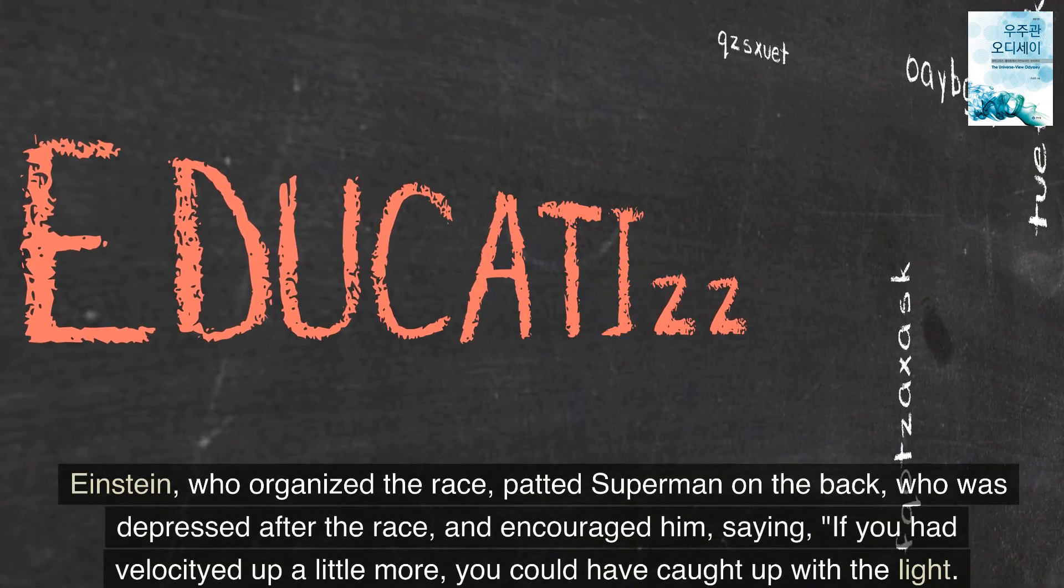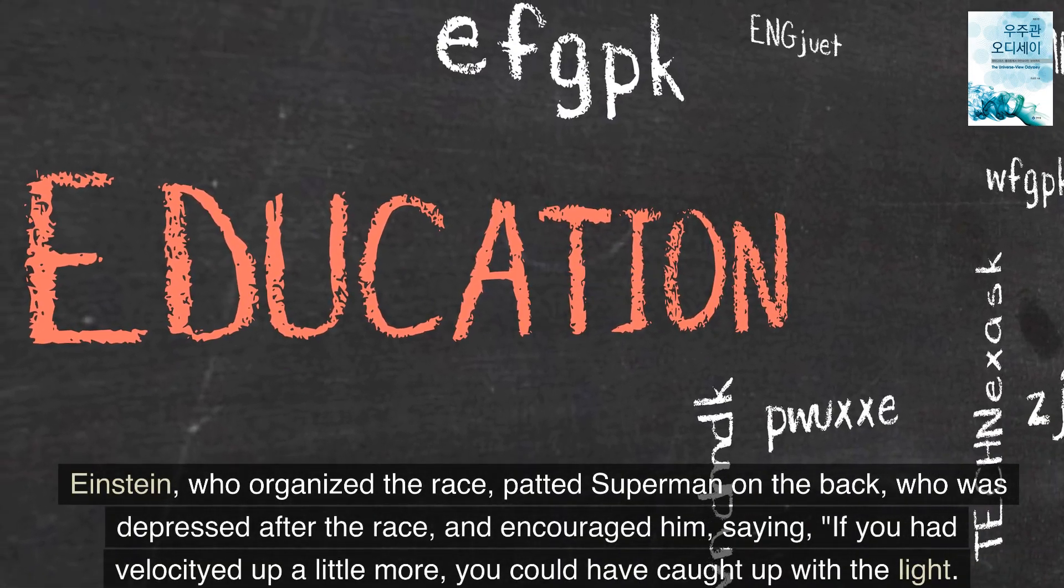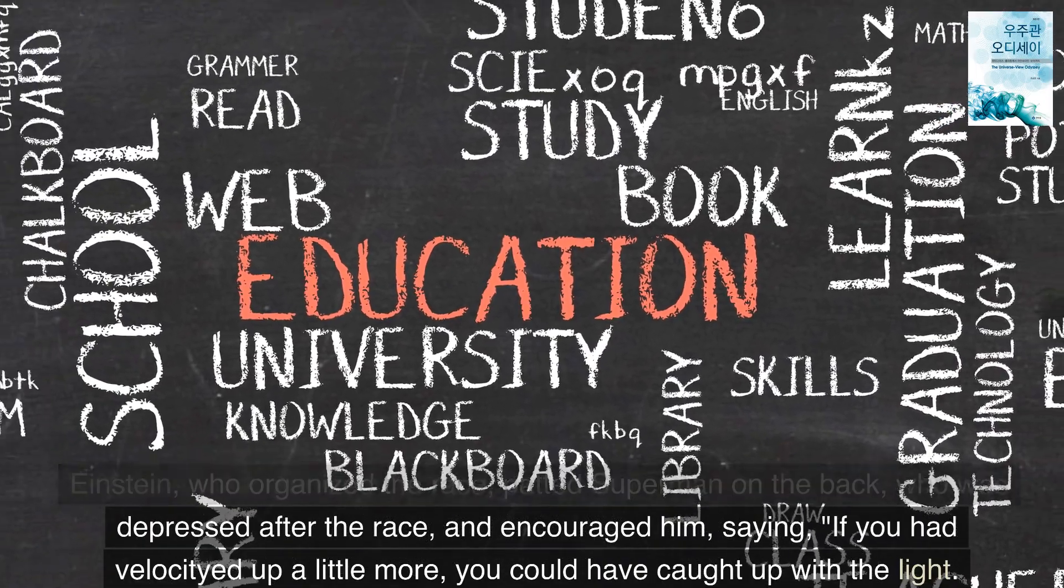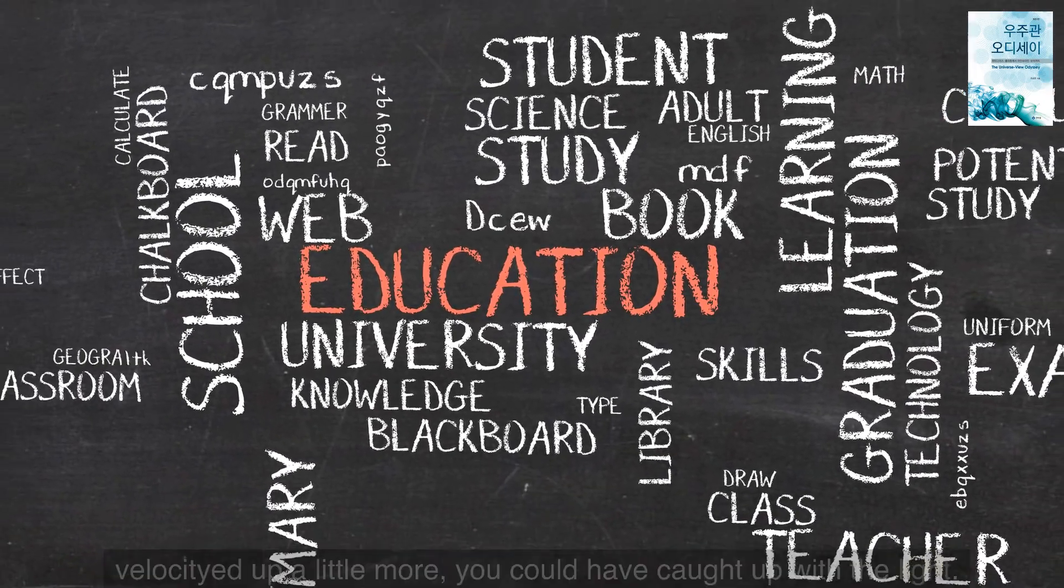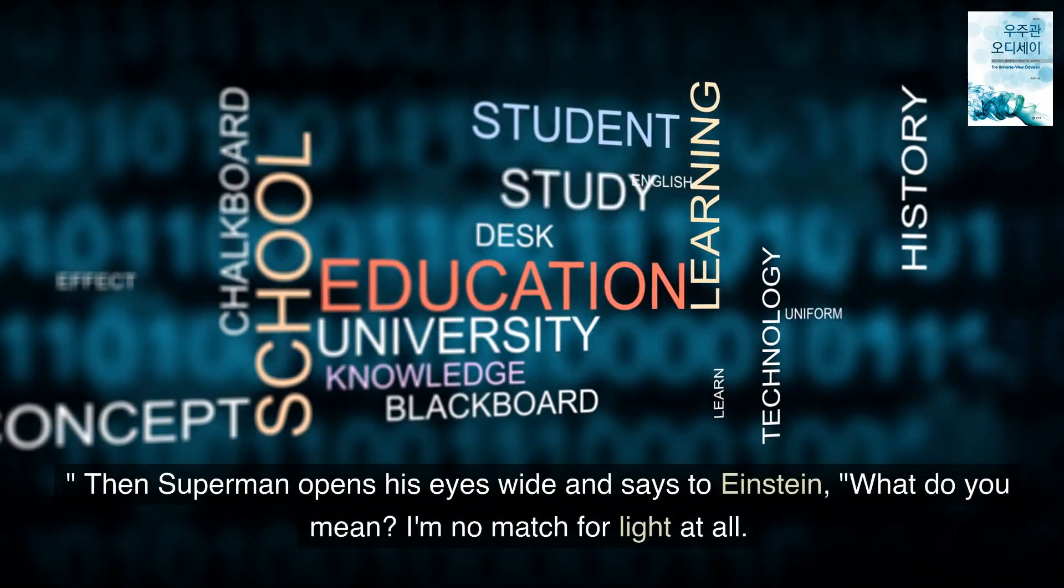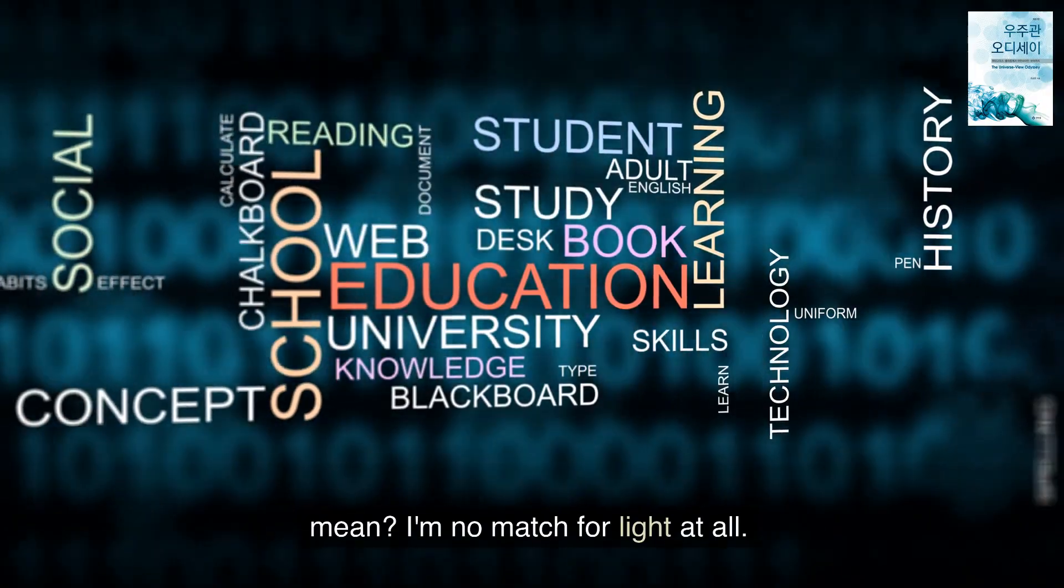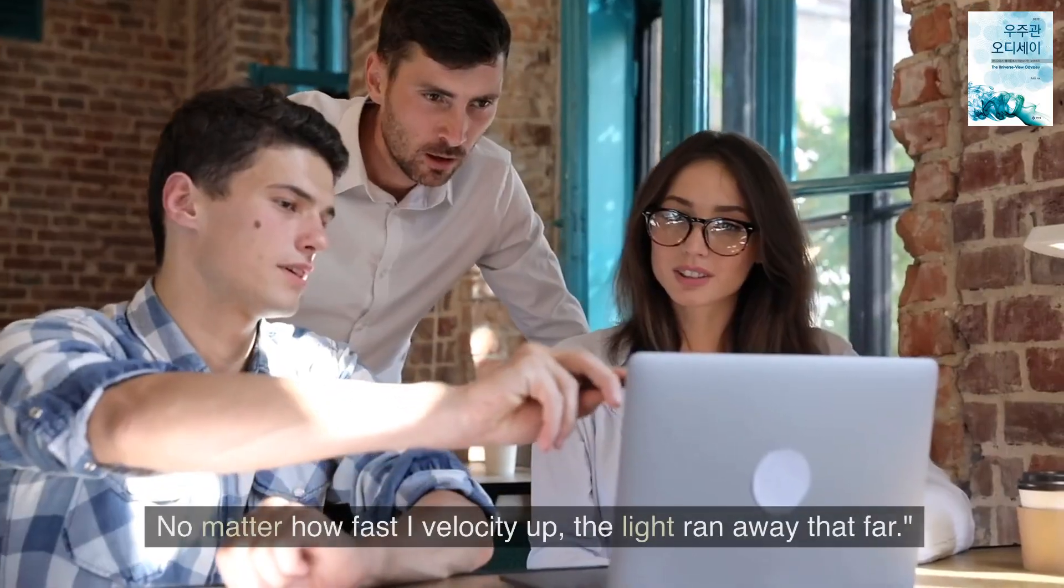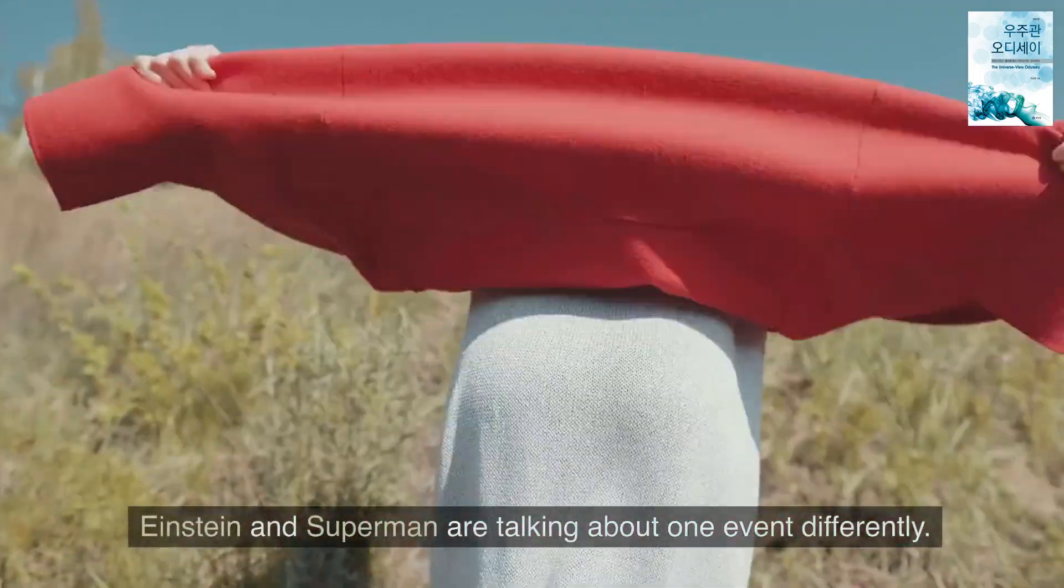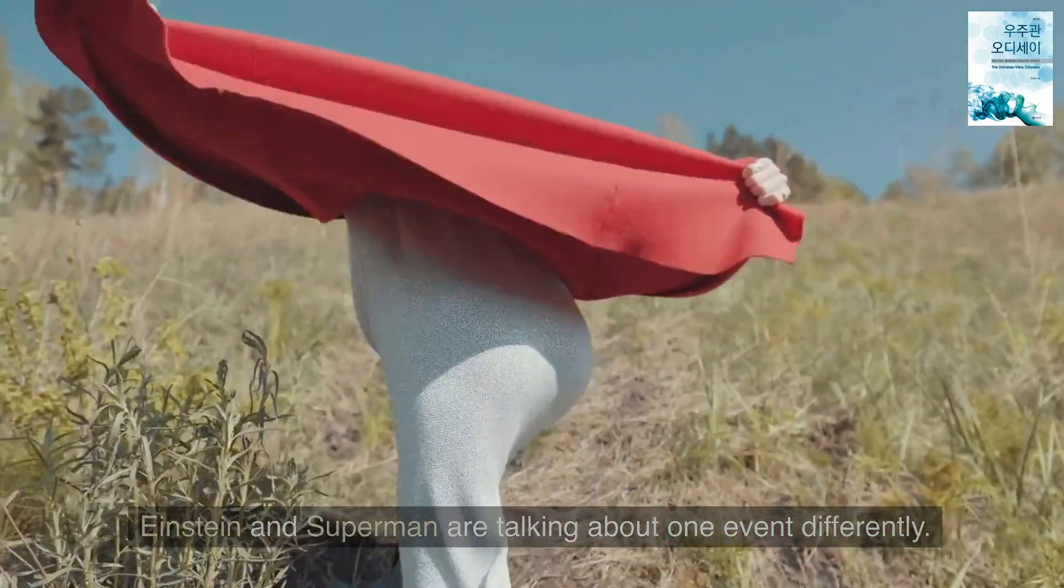Einstein, who organized the race, patted Superman on the back, who was depressed after the race, and encouraged him saying if you had sped up a little more you could have caught up with the light. Then Superman opens his eyes wide and says to Einstein, what do you mean? I'm no match for light at all. No matter how fast I speed up, the light ran away that far.